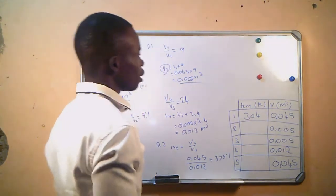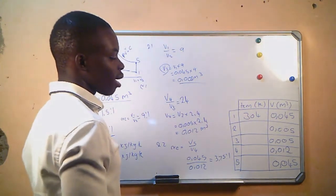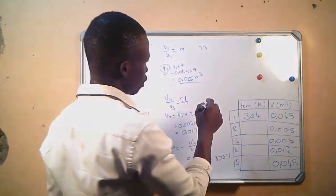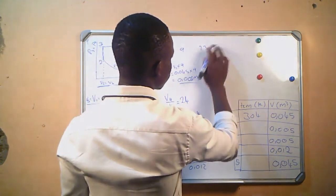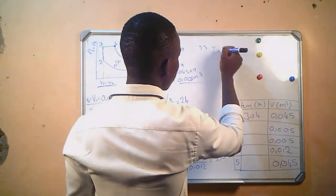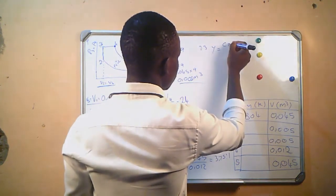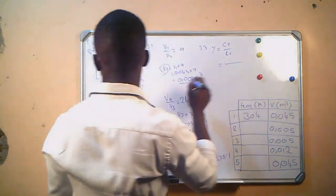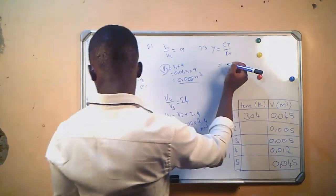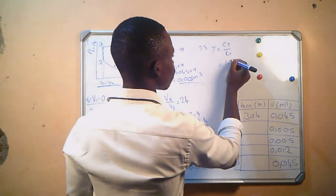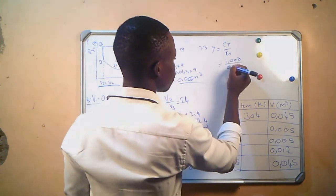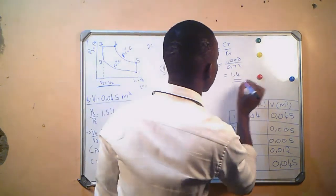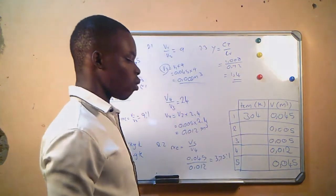Question number 3: value of gamma. We know gamma equals Cp divided by Cv. Our Cp is 1.008 and Cv is 0.72, which gives us gamma equals 1.4. That is our gamma. Then we move to question number 4.